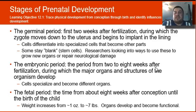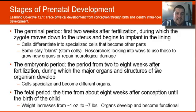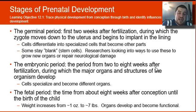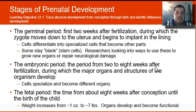In the womb, there are three stages of prenatal development: the germinal period, the embryonic period, and the fetal period. The germinal period means the zygote moves down the uterus and begins to implant in the lining; cells begin to split and differentiate into specialized cells. Some cells stay blank — cells that could become anything — and we call those stem cells. Researchers can use stem cells to grow new organs or repair neurological damage, such as programming a stem cell to become a retinal cell to improve vision.